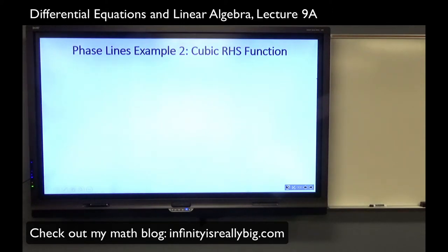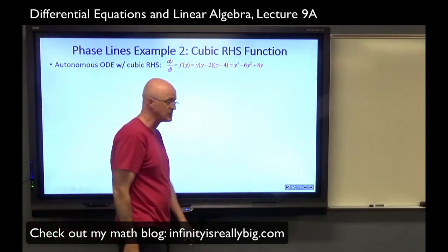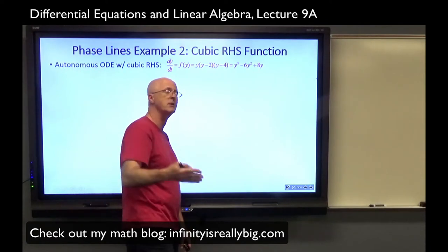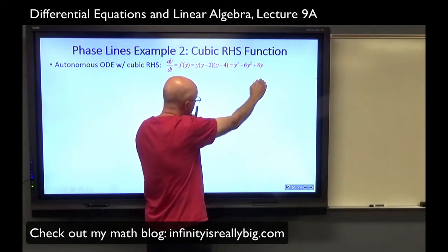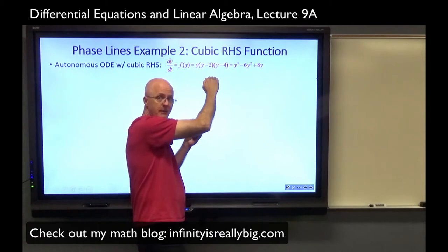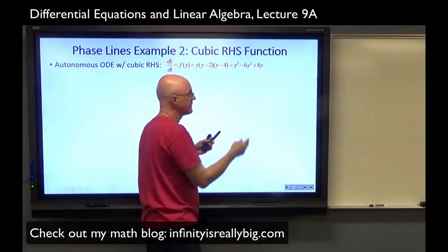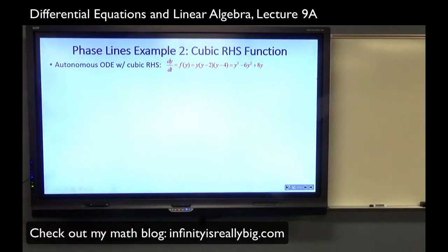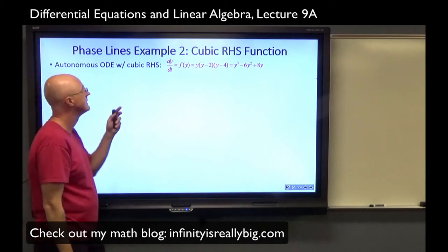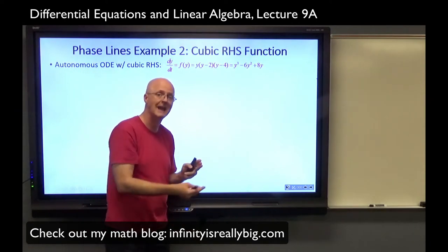Here's example 2. Now we have a cubic right-hand side function: f of y equals y times (y minus 2) times (y minus 4), which expands out accordingly. I purposely picked the factorization first so I know the equilibrium solutions are y equals 0, 2, and 4. There's no constant term, so a y can be factored out, and what's left factors as (y minus 2)(y minus 4). So there are three equilibrium solutions at 0, 2, and 4, corresponding to three equilibrium points on the phase line.